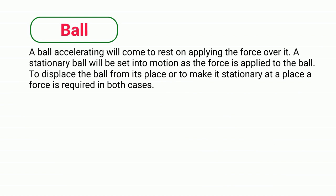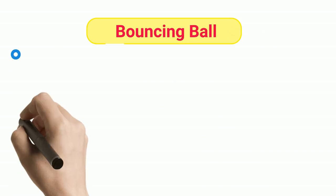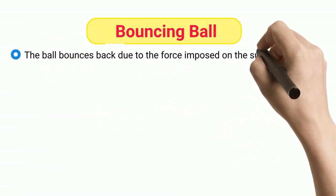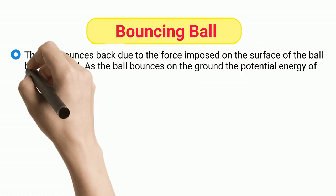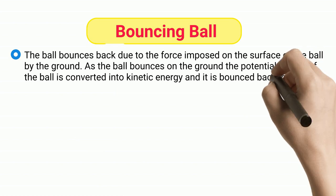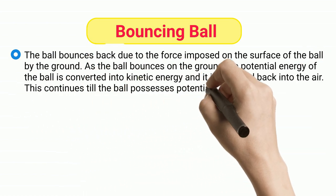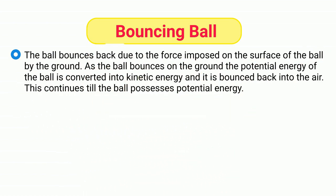Bouncing ball: The ball bounces back due to the force imposed on the surface of the ball by the ground. As the ball bounces on the ground, the potential energy of the ball is converted into kinetic energy and it is bounced back into the air. This continues till the ball possesses potential energy.